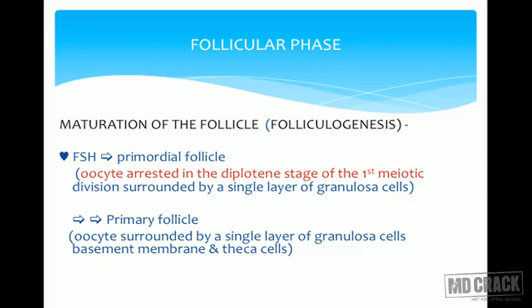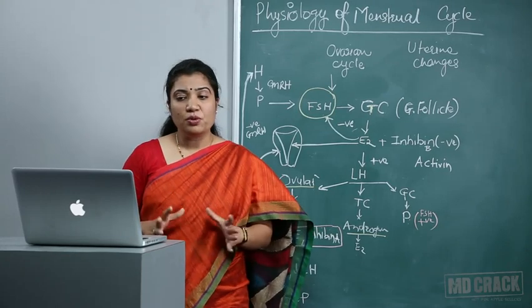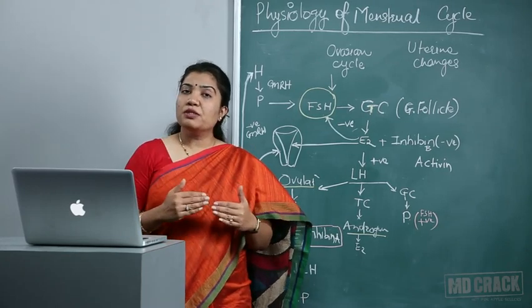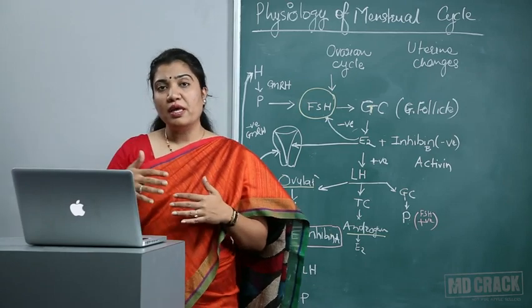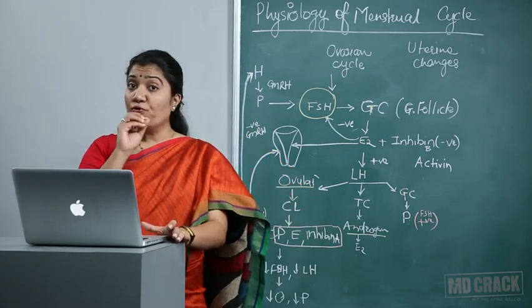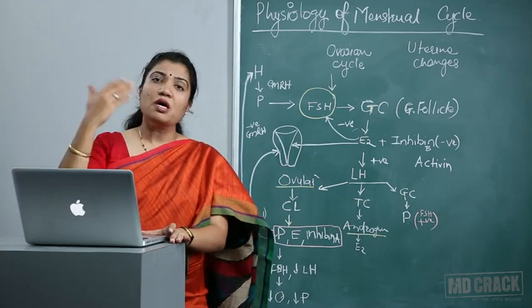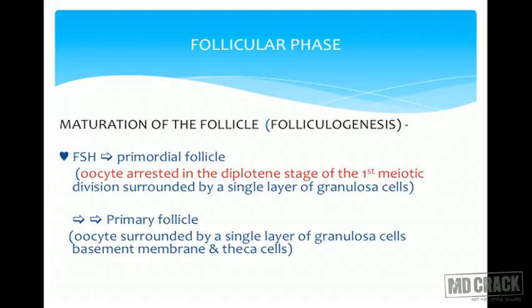FSH selects the primordial follicle, whose oocyte is arrested in the diplotene stage of the first meiotic division. In the primordial follicle, the oocyte is surrounded by granulosa cells — the inner layer is called granulosa cells and the outer layer is called theca cells. Then the primary follicle forms.